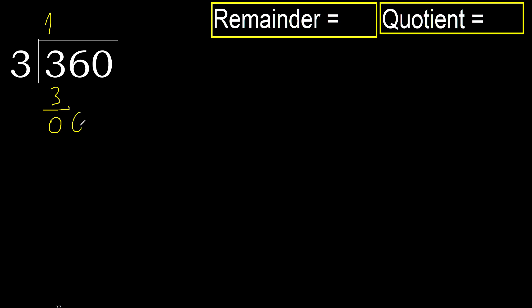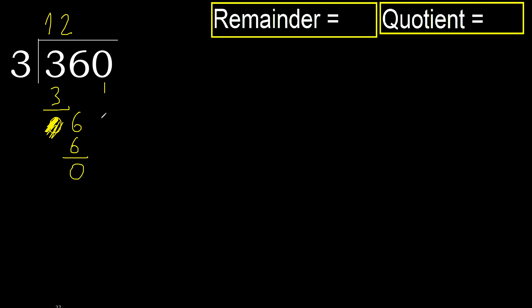3 minus 3 is 0. Next, bring down 6. Eliminate 0 on this side. 3 multiplied by 2 is 6 — 6 is not greater. Subtract, giving 0.